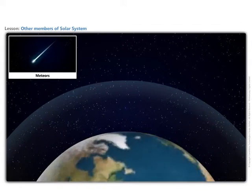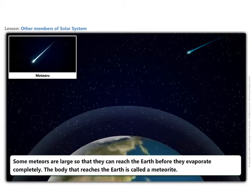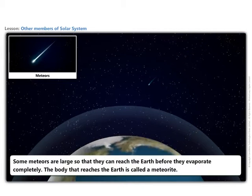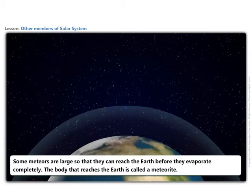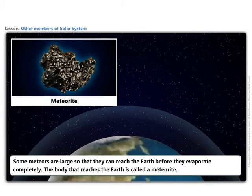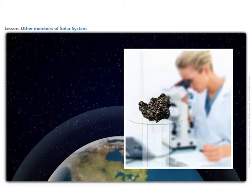Some meteors are large, so they can reach the Earth before they evaporate completely. The body that reaches the Earth is called a meteorite. Meteorites help scientists investigate the nature of the material from which the solar system was formed.